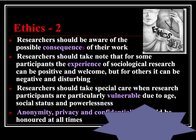For some participants, the experience of sociological research can be positive and welcome, but for others it can be negative and disturbing. Researchers should take special care when researching particularly vulnerable participants because of age, social status and powerlessness - including people who are homeless or victims of crimes. Anonymity, privacy and confidentiality should be honoured at all times. How would William Whyte's Street Corner Society conflict with so many of these ethical issues, and what did he do to ensure anonymity, privacy and confidentiality of his participants?